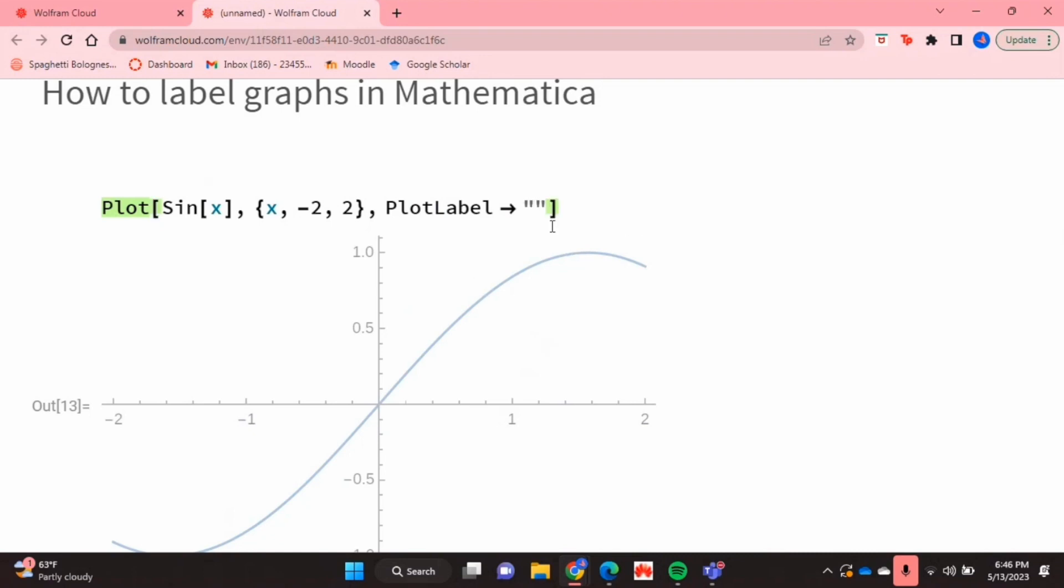And in that arrow, after inverted commas, you're going to put what you want your plot label or your plot title to be.